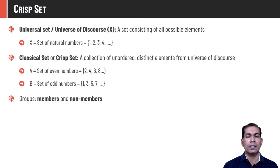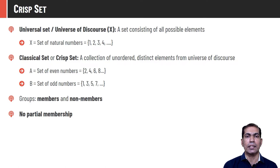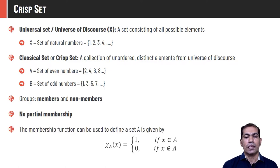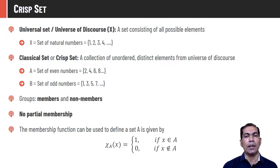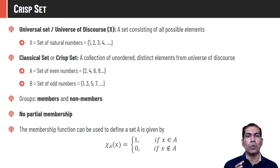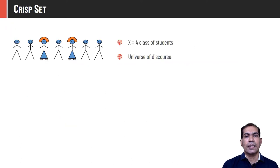Any element is always either present in a set or not — there is nothing like partial membership in a crisp set. An element is either fully in or fully out. The membership function is described using the characteristic function: χ_A(x) = 1 if element x is a member of set A, and χ_A(x) = 0 if element x is not a member of set A. This assigns a binary membership value to each element.